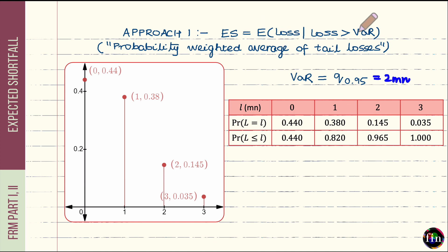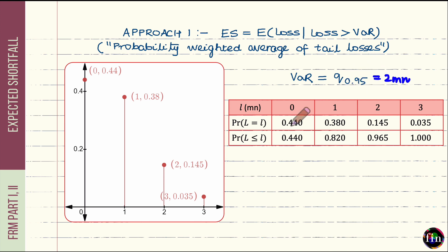Coming back to the formula for expected shortfall, we focus on losses sitting in the right tail. Given the loss distribution, there is a 3.5% probability mass at 3 million. The total tail should have a 5% probability mass (the level of significance). So if 3.5% is at 3 million, we walk down a distance of 1.5% — meaning the tail contains some portion of the 2 million loss and all of the 3 million loss.